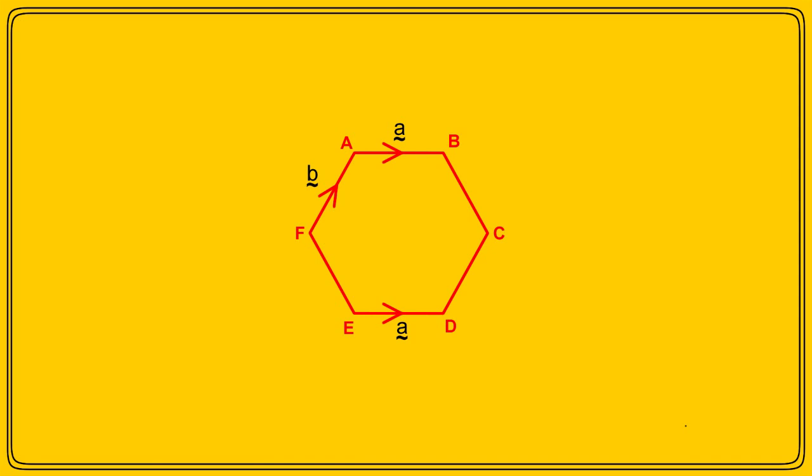But you will immediately see that there's another vector that's equal to the vector FA, and that is the vector DC, because it's the same length and points in the same direction. So, I'll call this vector b too.